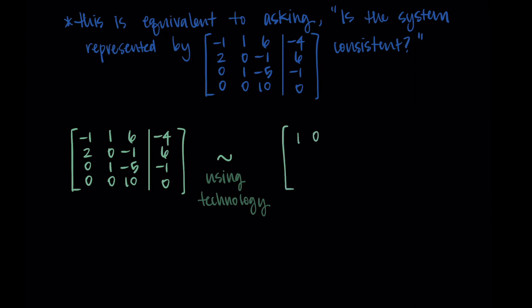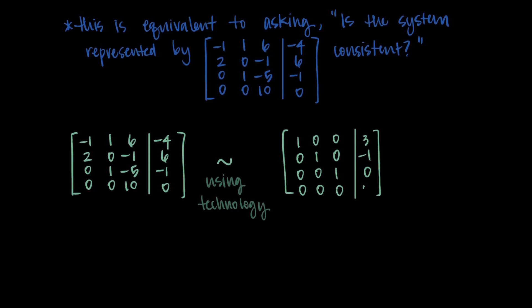So I'm going to use technology and get the row reduced system. When I do that, I get 1, 0, 0, 3; 0, 1, 0, negative 1; 0, 0, 1, 0; and a row of zeros.